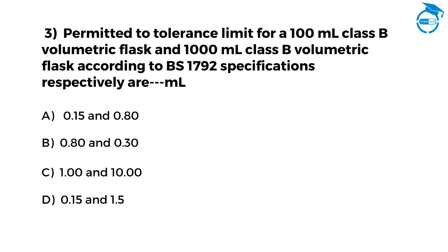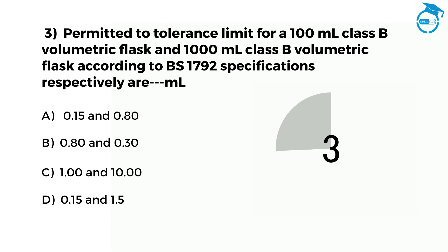The next question is: the permitted tolerance limit for a 100 mL class B volumetric flask and a 1000 mL class B volumetric flask according to BS 1792 specifications respectively are, in mL. Option A: 0.15 and 0.80. Option B: 0.80 and 0.30. Option C: 1.00 and 10.00. Option D: 0.15 and 1.5. The right option is B, that is 0.80 and 0.30.